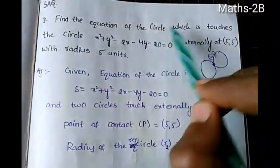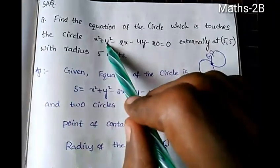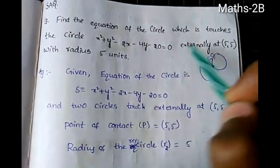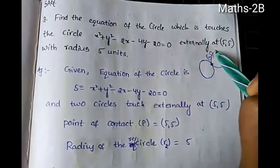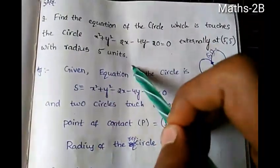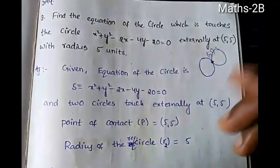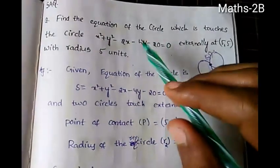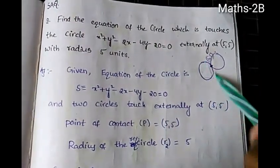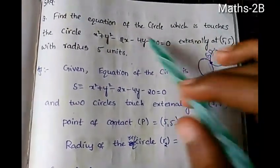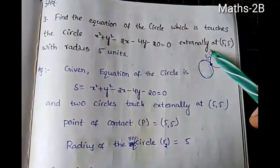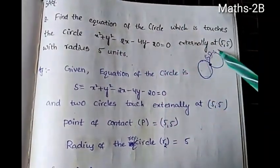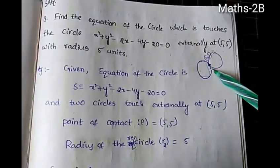This circle touches the given circle externally at the point (5, 5) with radius 5 units.